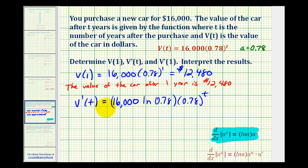This is going to measure the rate of change of the value of the car with respect to time. So to determine V'(1), we'll replace t with one in the derivative function. So we'll have 16,000 natural log 0.78 times 0.78 to the first power. So V'(1) is going to be equal to this product.